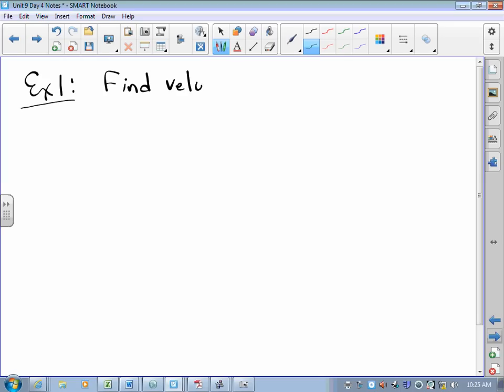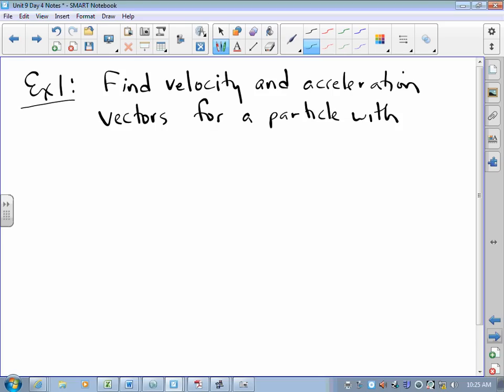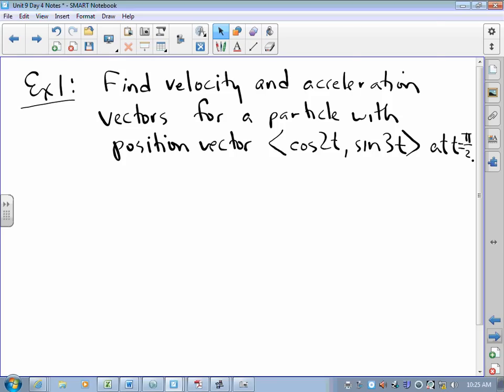So I would find velocity and acceleration vectors for a particle with position vector cosine 2t, sine 3t and let's do that when time is pi over 2. Let's do that. I want velocity and acceleration.